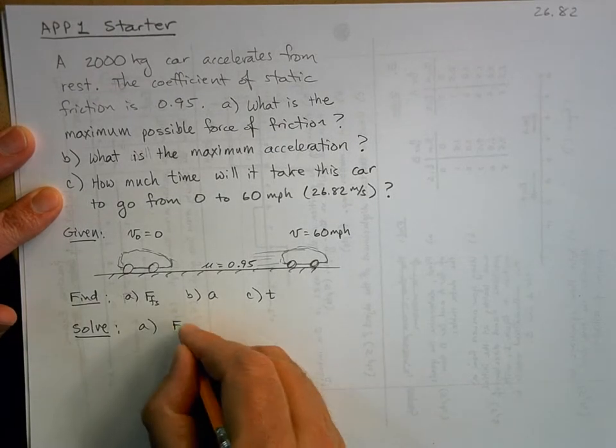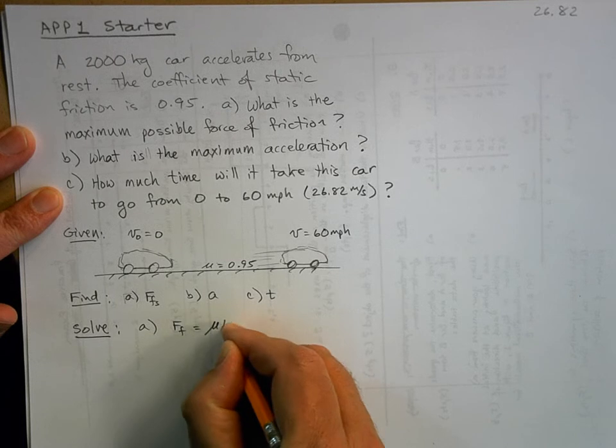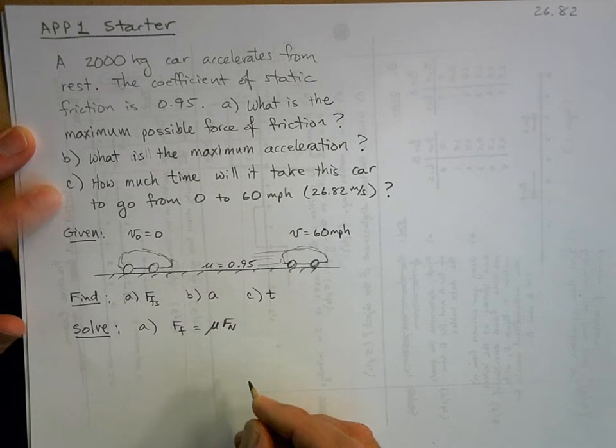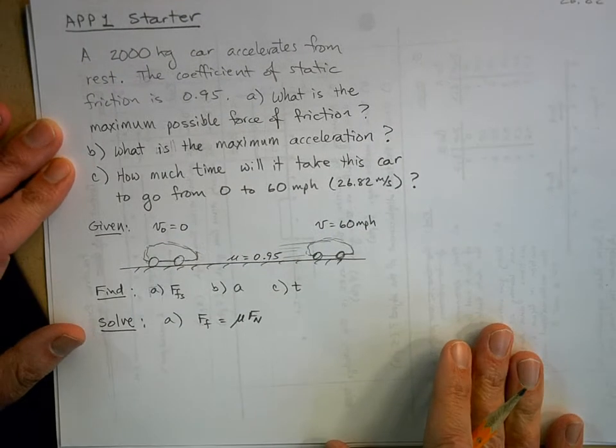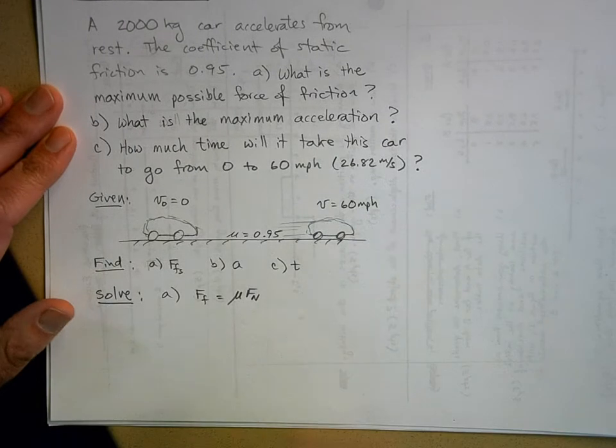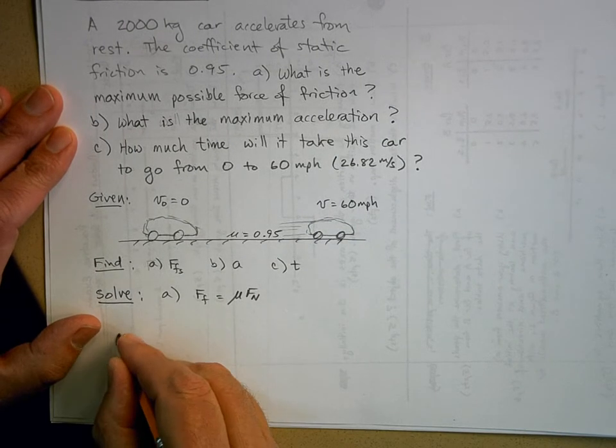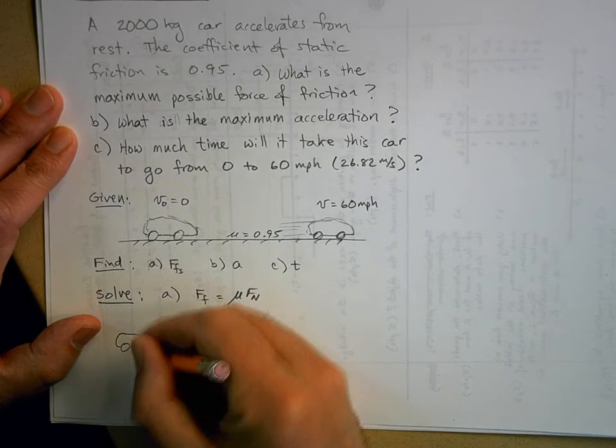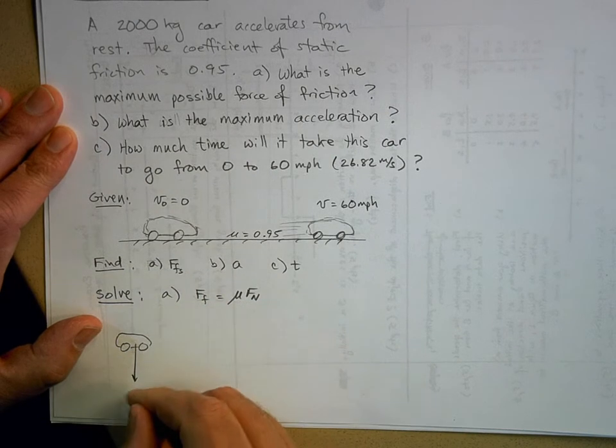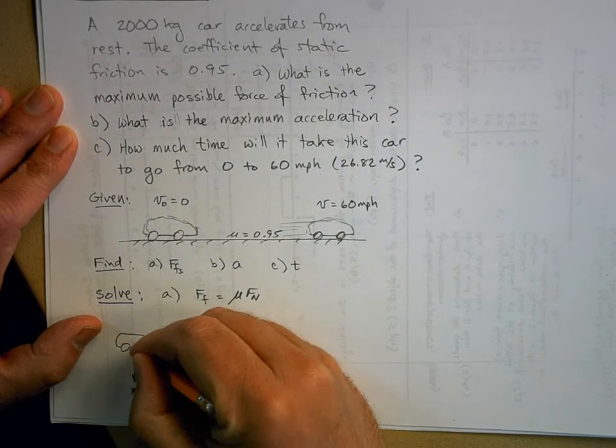Well, we want the force of friction. That's going to be equal to mu times the normal force. Now let's go ahead and draw a free body diagram of the car.